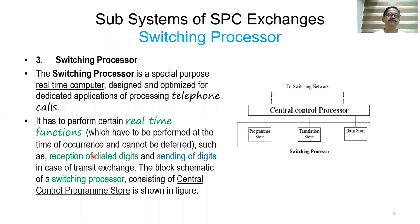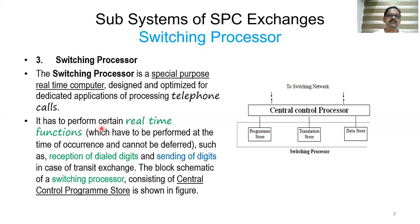Now we will discuss the third subsystem known as the switching processor. The switching processor is a special-purpose real-time computer designed and optimized for dedicated applications of processing telephone calls. It performs certain real-time functions which must be performed at the time of occurrence and cannot be deferred, such as reception of dial digits and sending of digits in the case of a transit exchange.